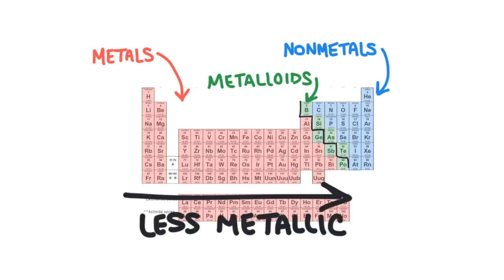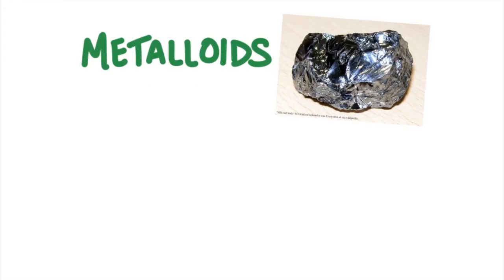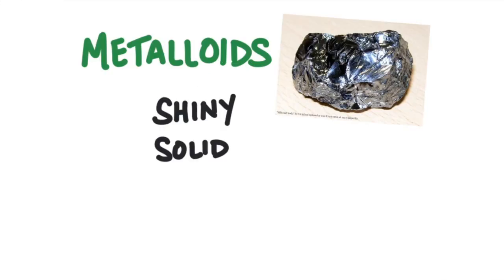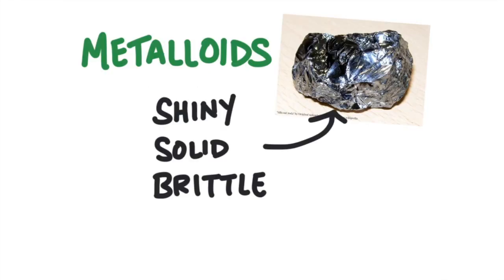Some of the elements that touch the stair step have equal properties of both metals and non-metals. We call these elements metalloids, like silicon. Silicon is shiny and solid yet it's very brittle. It conducts electricity but only slightly — we call it a semiconductor.